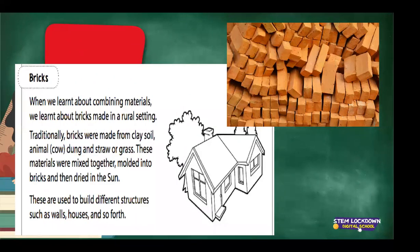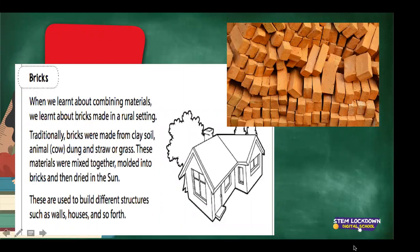Traditionally, bricks were made from clay soil, animal dung, and straw or grass. These materials were mixed together, molded into bricks, and then dried in the sun. They were used to build different structures such as walls and houses. Currently, many companies use advanced ways of making bricks in large quantities — some companies can produce 38,000 bricks in an hour — whereas in traditional societies their methods were much slower.